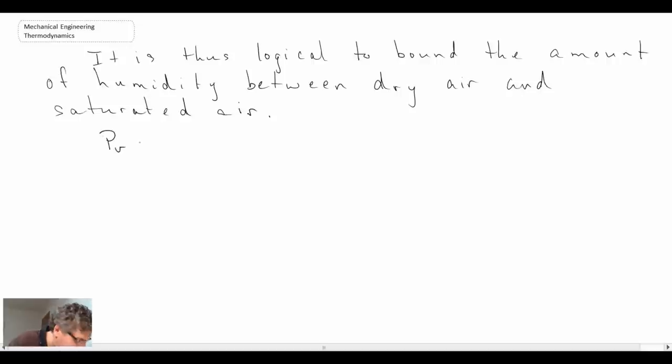What we'll say is that the partial pressure due to the water vapor is equal to the saturation pressure that you would get out of the steam table at whatever temperature you are looking at, so the atmospheric temperature conditions. And so we can then write the specific humidity for saturated air.